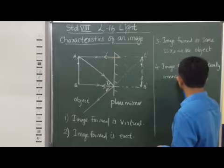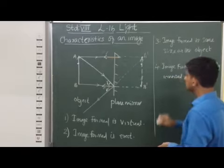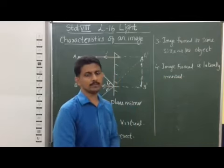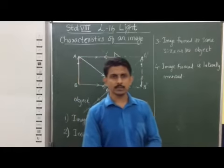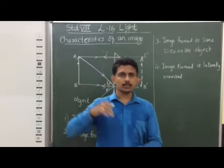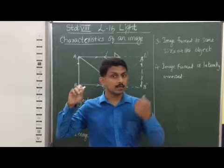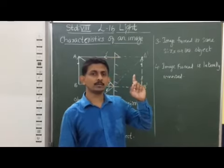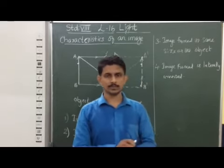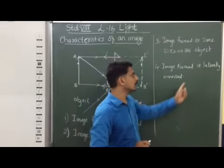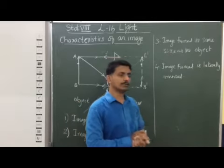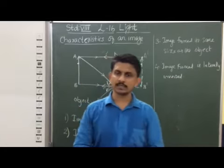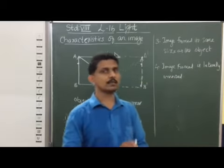This is the fourth property — the image formed is laterally inverted. Lateral inversion means the right of the object appears as the left of the image, and the left of the object appears as the right of the image. This property is known as lateral inversion.